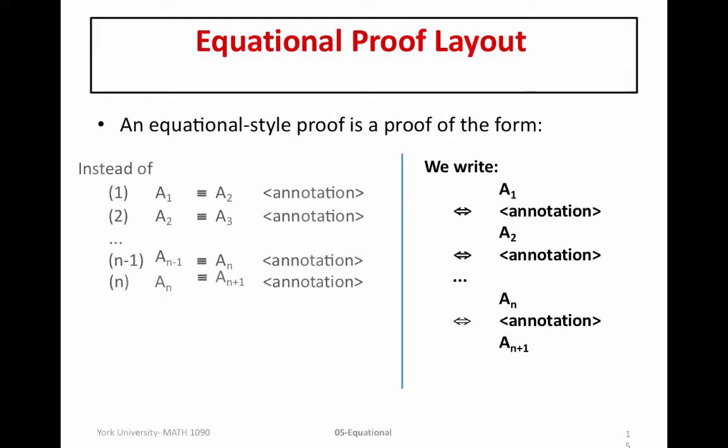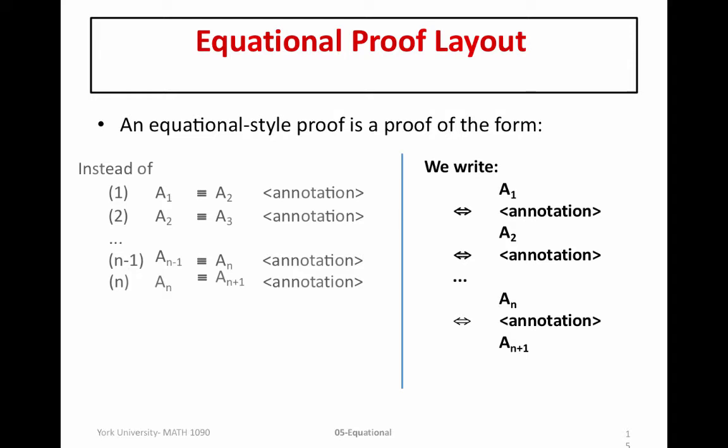First let's recall what our equational style proof method looks like. Originally, the way we have used it is by establishing equivalences between well-formed formulas. The Hilbert style version of the equational proof has equivalences at each step, which we translate into our equational style proof where we begin with any well-formed formula and establish a series of equivalences from one level to the next.